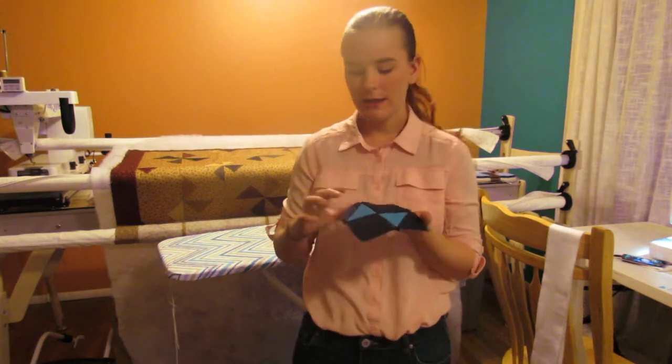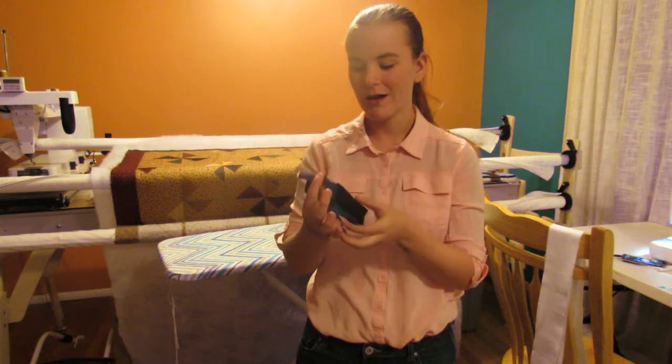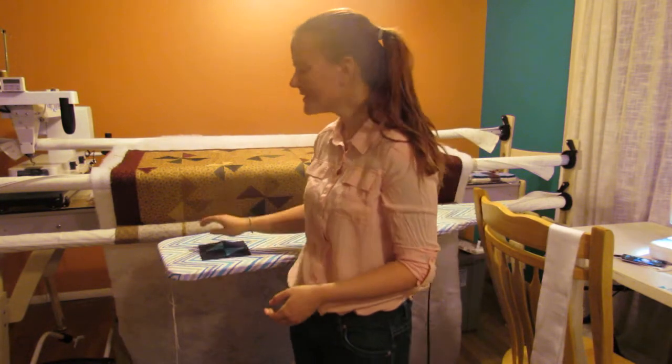In this tutorial we are going to be practicing some skills like an accurate quarter inch seam as always, half square triangles, and accurate cutting because we are going to be using a ruler that has a 45 degree angle in order to get these half square triangle blocks nice and trimmed. So let's get started.